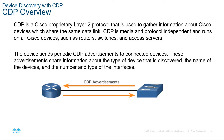The device sends periodic CDP advertisements to connected devices. These advertisements share information about the type of device discovered, the name of the devices, and the number and type of interfaces. By default on Cisco devices, CDP is enabled.